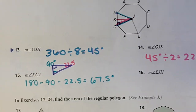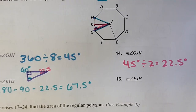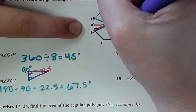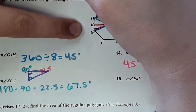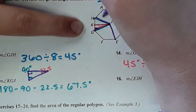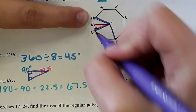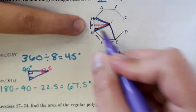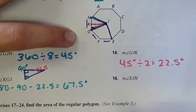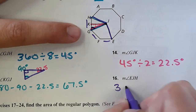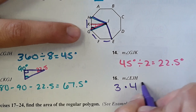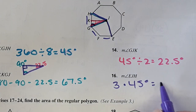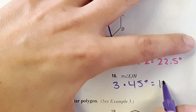And then number 16 asks for angle EJH. This is like spanning one, two, three sections of the octagon. So we can just do 3 times 45 degrees and get that angle, which would be 135 degrees.